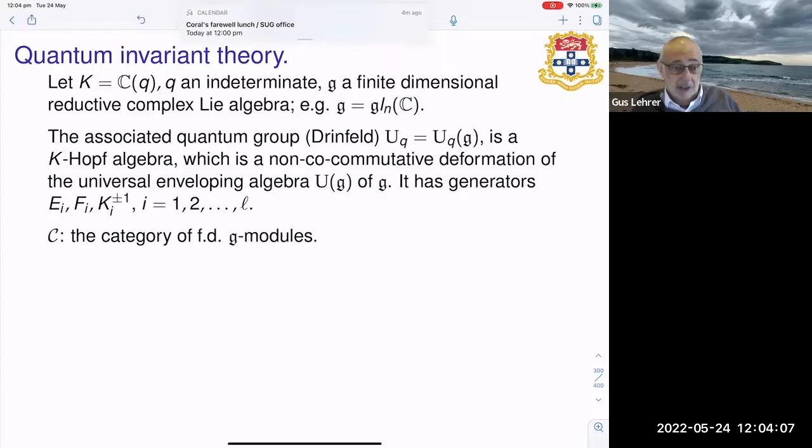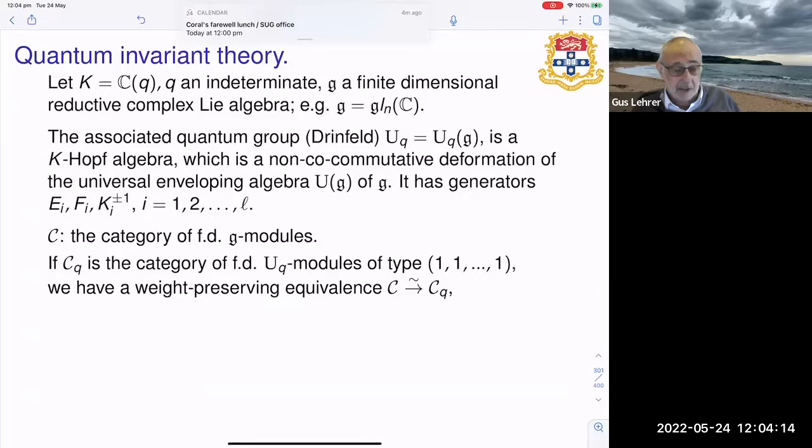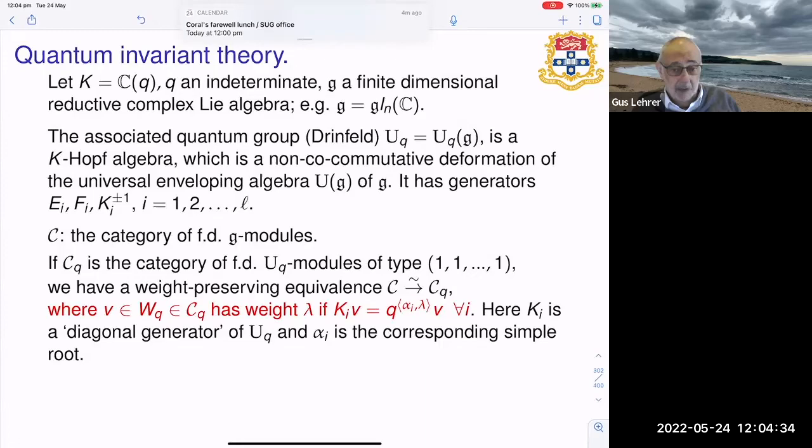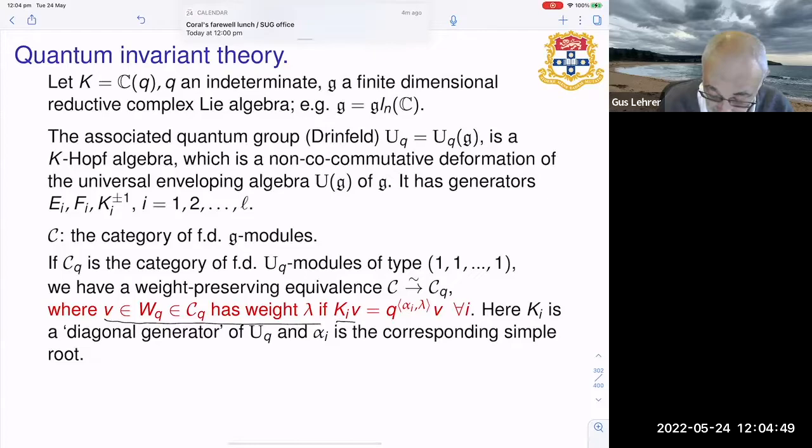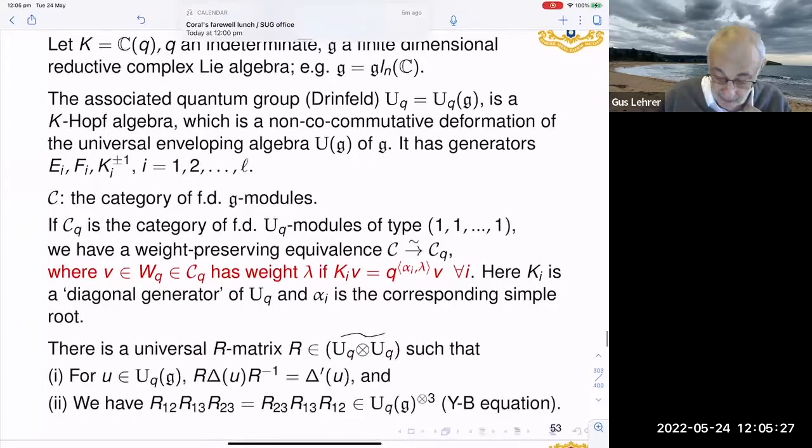And it is a Hopf algebra over k which is a non-cocommutative deformation of the universal enveloping algebra of g. C is the category of finite dimensional g modules. We have a somehow an enhanced shadow of C in C_q which is the category of finite dimensional U_q modules of type 1-1-1, which means the modules we consider are sums of weight spaces where the definition of a weight vector is that v has weight lambda if this equation holds for all i.